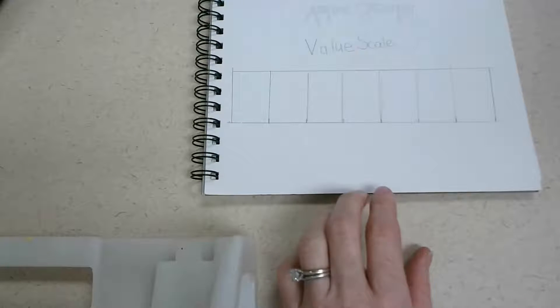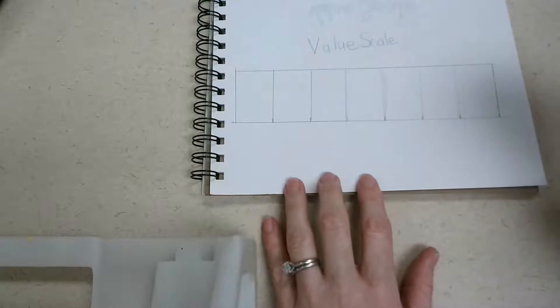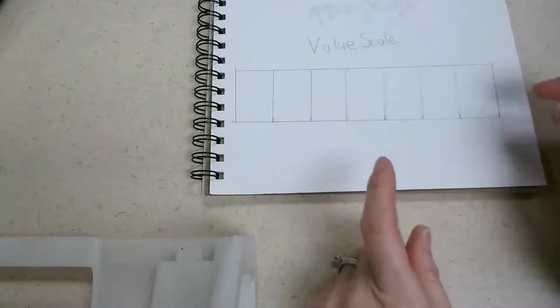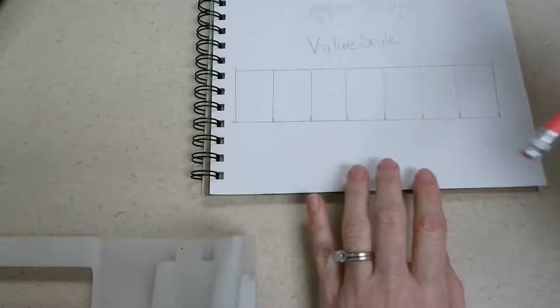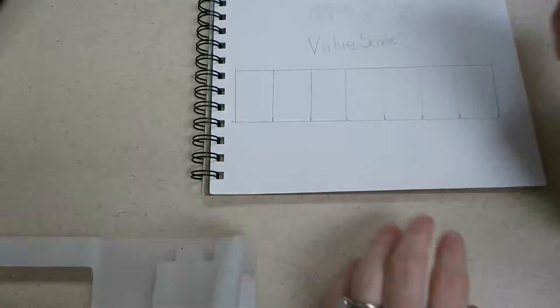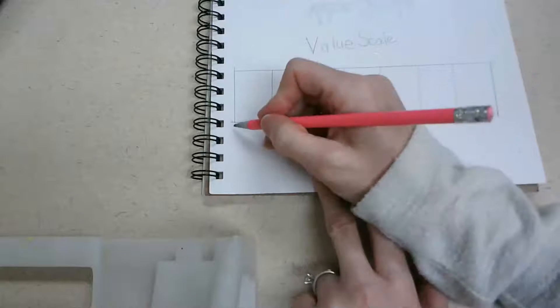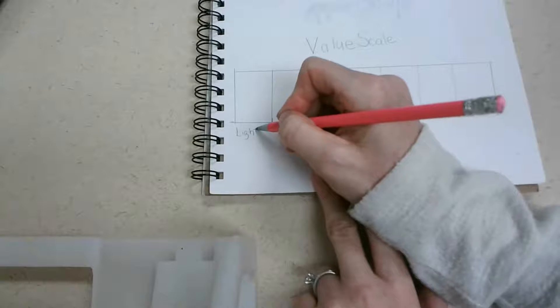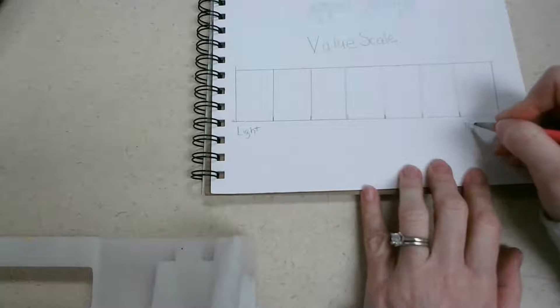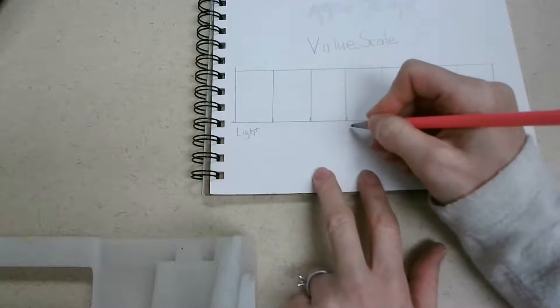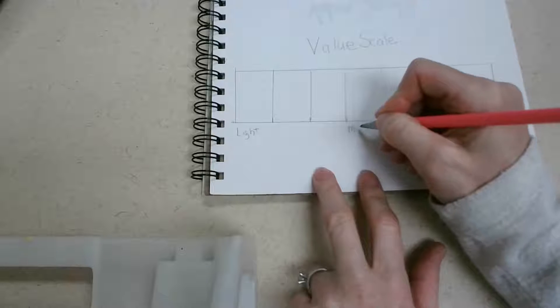Or anything else that you have that has straight edges. Sorry about my awkwardness, I'm a little bit off here and crooked, but that's only because I am trying to work around the cord of my webcam. All right, so let's write down here 'light,' and let's write over here 'dark,' and right in the very middle is going to be your midtone.